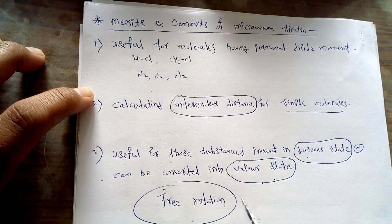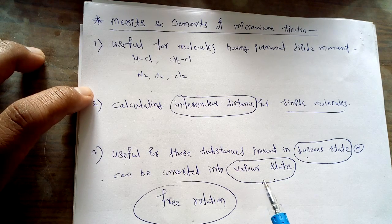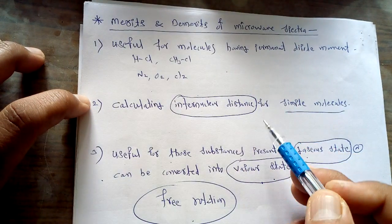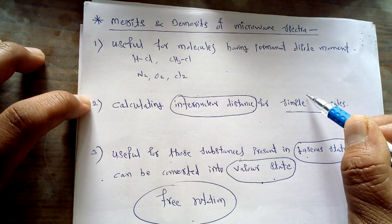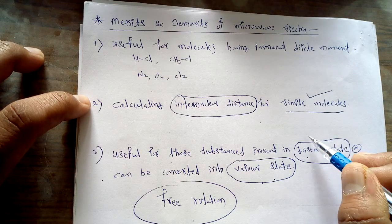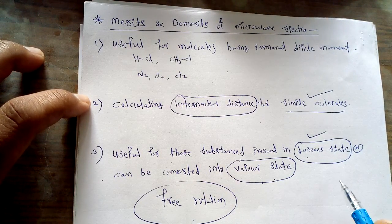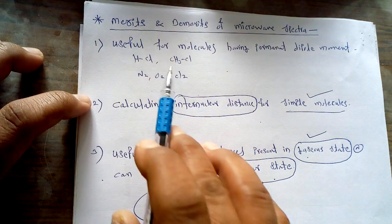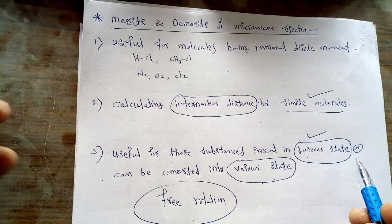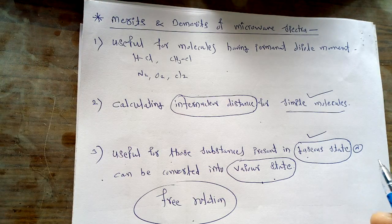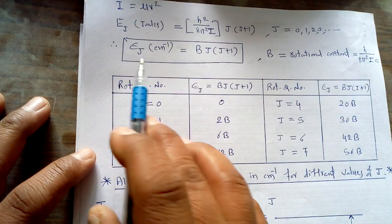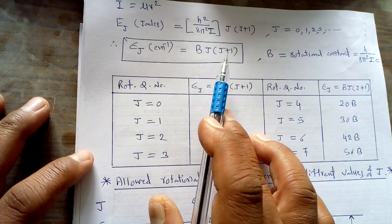So these are the important merits and demerits of this spectroscopy: it is operative for compounds that have a permanent dipole moment, it is useful for simple compounds, and it is useful for substances present in a gaseous state. In this lecture we calculated the rotational energies in units of per centimeter using the equation B·J(J+1), giving the allowed rotational energies for different values of J.